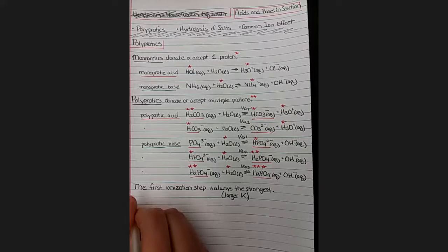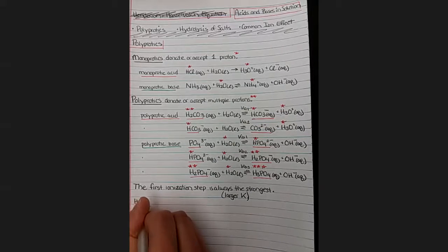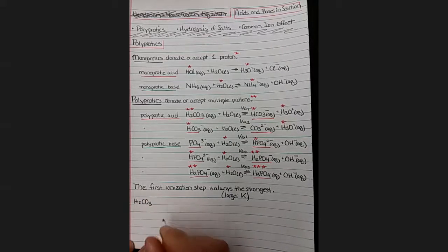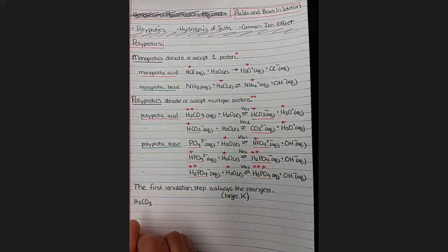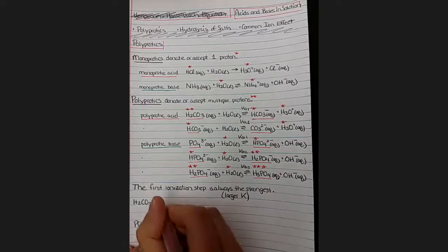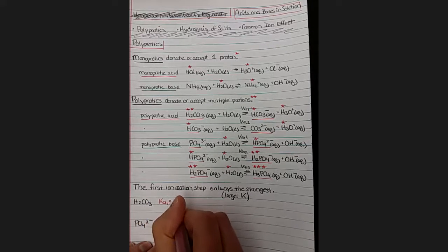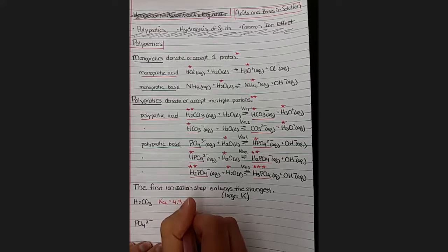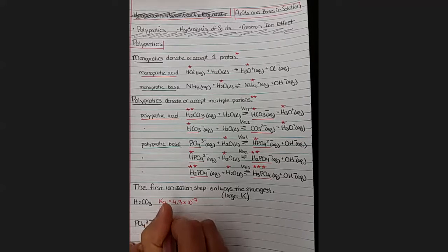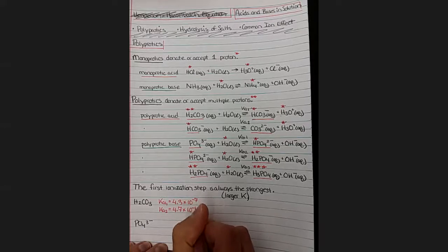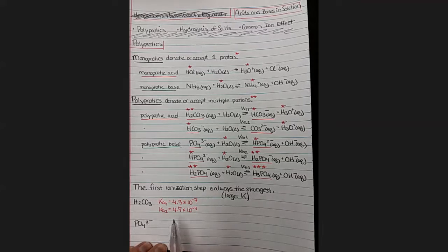And we know the values for those K values, the values for the K constants from reference tables. And I've already looked them up. So our KA1, that first proton donation, the KA1 is 4.3 times 10 to the negative 7th. For the donation of the second proton, it's 4.7 times 10 to the negative 11th.